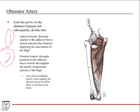The anterior branch comes down and goes across anterior to the adductor brevis muscle — the adductor brevis is the barrier between the two branches. The anterior branch provides branches that supply the musculature of the thigh; there's not really much else to know about that.